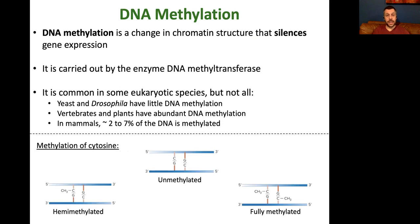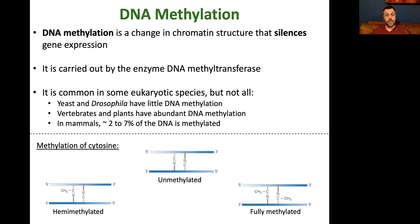Let's begin by talking about DNA methylation. This is basically a change in chromatin structure, but here we're talking about direct covalent modification — specifically methylation — of the DNA itself. This is performed by an enzyme called DNA methyltransferase, because it transfers methyl groups to DNA. DNA methylation is common to some eukaryotic species, but not all.